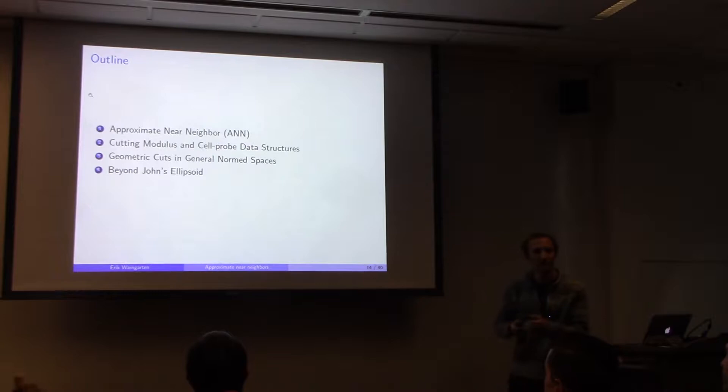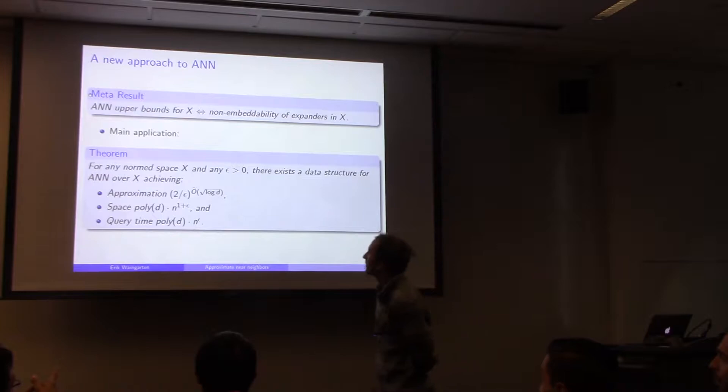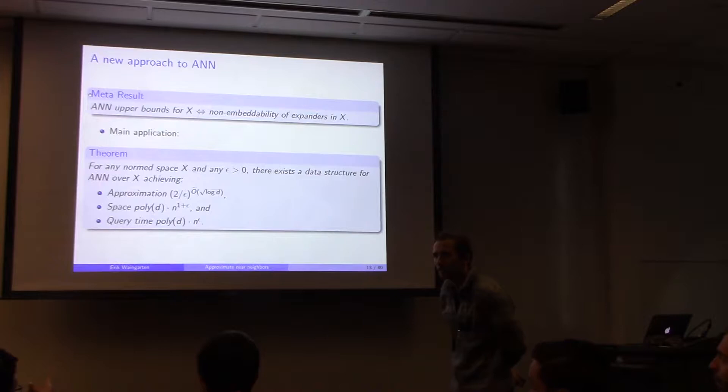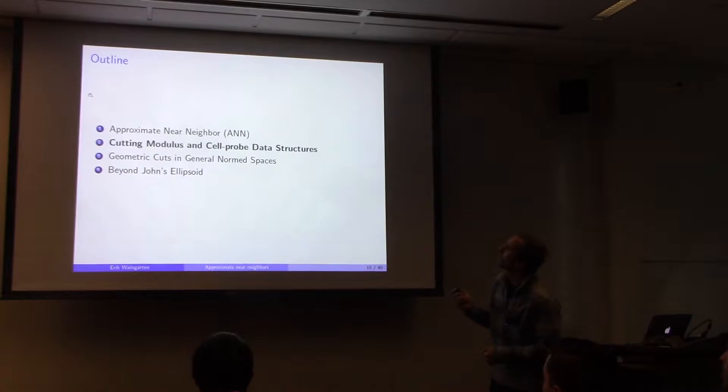A clarifying question: from the earlier result plus John's theorem you get sqrt(d)/epsilon; with the new result you get 2^{sqrt(log d)} divided by epsilon over sqrt(log d). So it's slightly worse in epsilon. Treating epsilon as roughly 0.1, the approximation is subpolynomial in d.